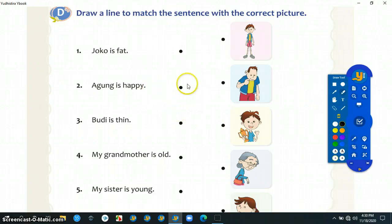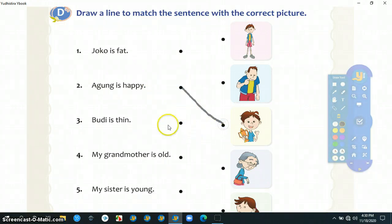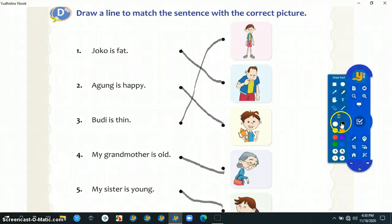Agung is happy, kita tarik gambarnya. Budi is thin. Joko is fat. And then my grandmother is old. Kemudian my sister is young. Ini jawabannya.